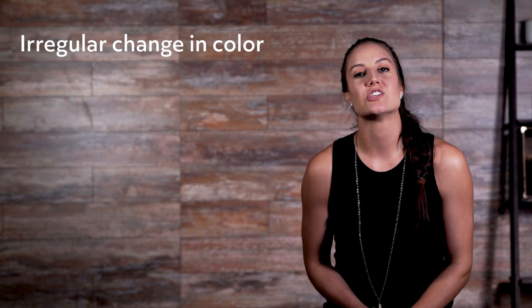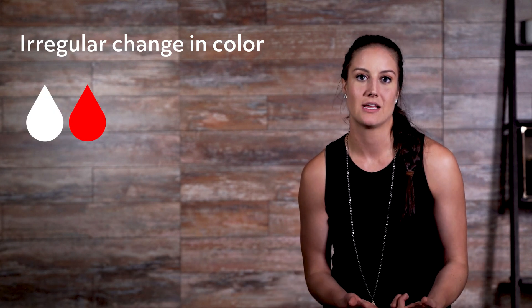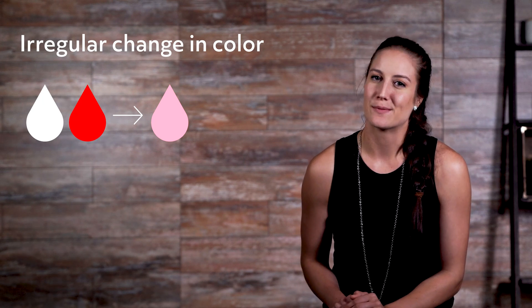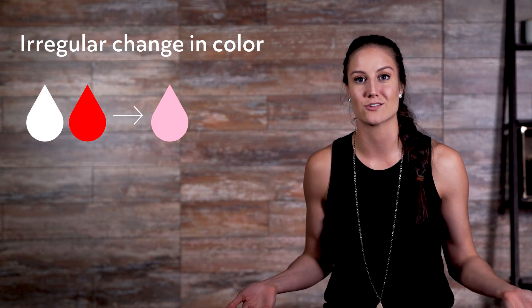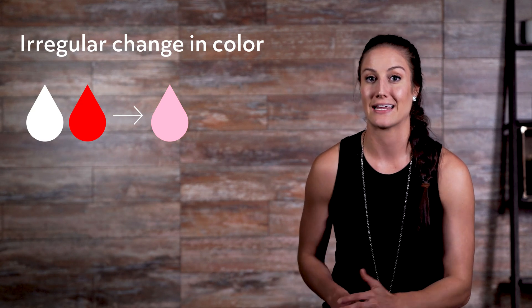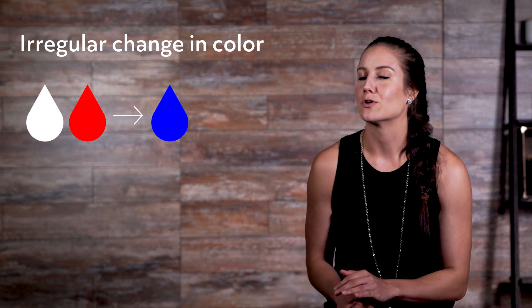Well, the same thing is true with chemical reactions. Every chemical reaction yields a different result, which inevitably means that chemical reactions will not all have identical observable properties. However, if you mix two chemicals together and want to know if they reacted with one another, you could look for these observable characteristics. Irregular change in color: if you mix white and red together and get pink or light red, that's probably not a sign of a chemical reaction. However, if you mix a red and white substance together and get blue, then you might have a chemical reaction.